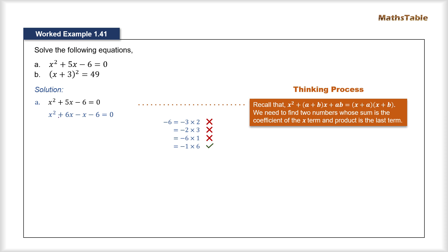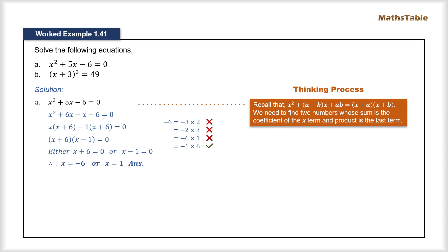Next, we group the first two and last two terms together and take common factors between each group. This gives us the factorized form (x + 6)(x − 1). Applying the product rule, either x + 6 = 0 or x − 1 = 0. Solving these, we subtract 6 on both sides for the first equation and add 1 on both sides for the second, giving the two solutions x = −6 and x = +1.